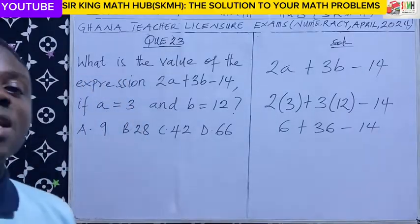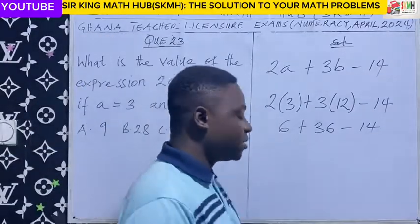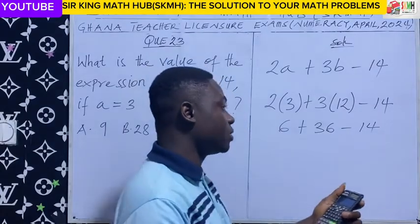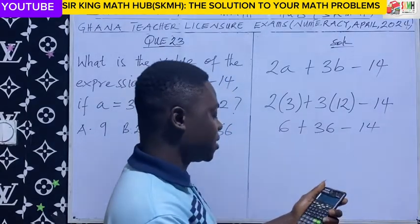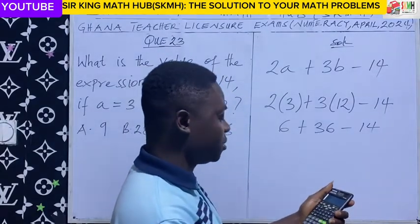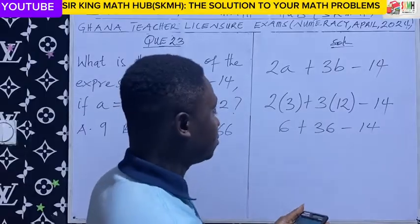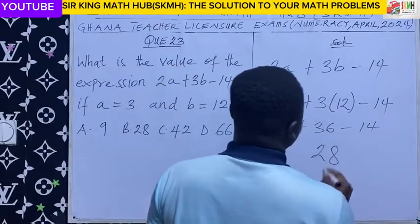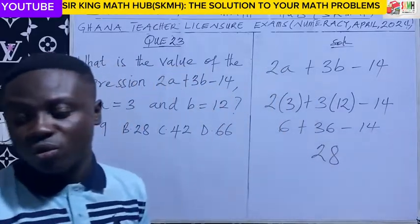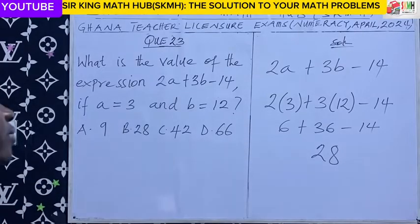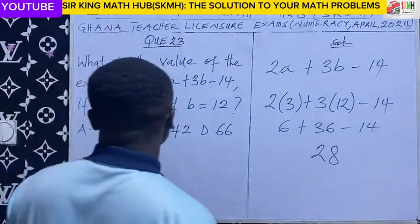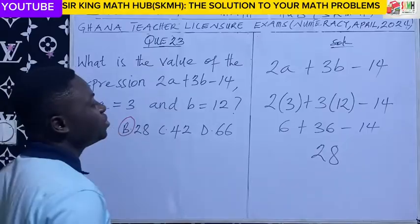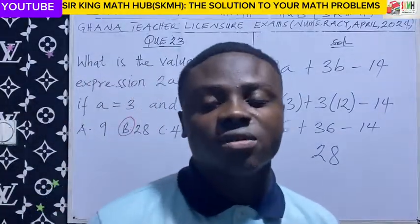Calculators are allowed, so we can easily enter these values into the calculator's memory: 6 plus 36 minus 14. The answer is 28. So from the alternatives, the right answer is option B. Thanks for watching.